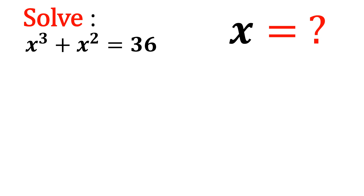Here we have one cubic equation: x³ + x² = 36. We have to find the value of x — solve for x. Let us find out how we will find the solution of this cubic equation.